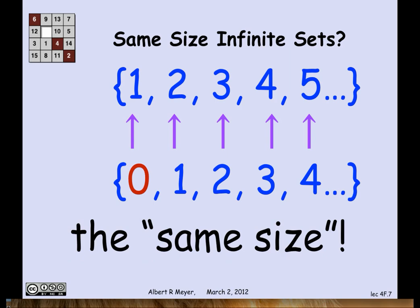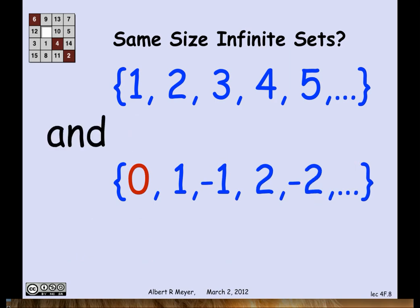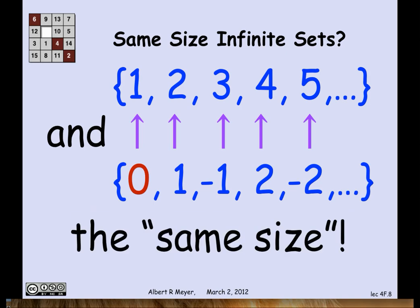And that's our first conclusion. In fact, you can go further. If you look at the positive integers and compare them to all the integers, positive and negative, you can also define a straightforward bijection that's illustrated on this slide: 0 to 1, 1 to 2, minus 1 to 3, 2 to 4, minus 2 to 5. And continuing in that pattern, this defines a bijection from all the integers to the positive integers. And that means we're going to regard those two sets as the same size.